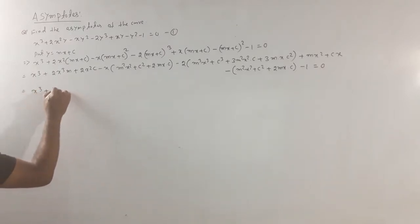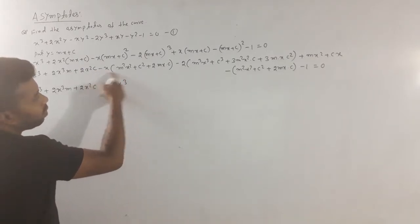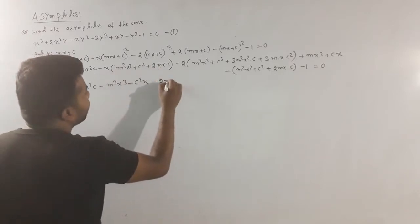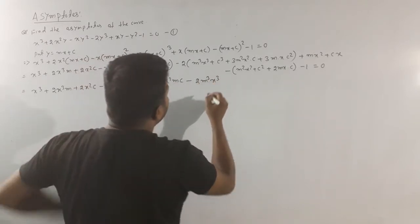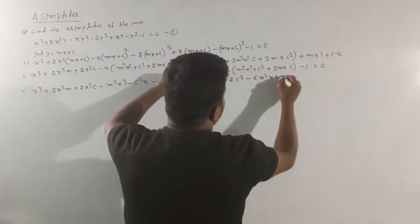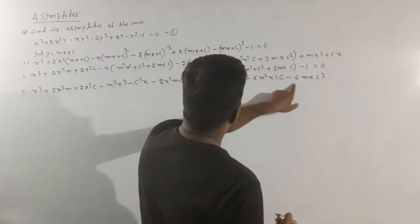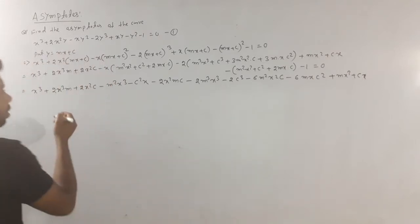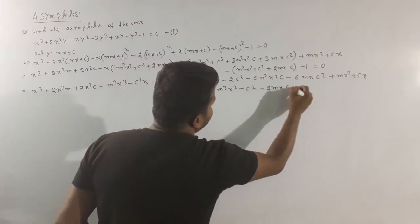After expanding: x³ plus 2x³m plus 2x²c, minus m²x³, minus c²x, minus 2c, minus m²c, minus m²q, minus 2mqx³, minus 2cq, minus 6m²x²c, minus 6mxc², plus mx² plus cx. Arranging terms: minus m²x² minus c² minus 2mxc minus 1 is equal to 0.